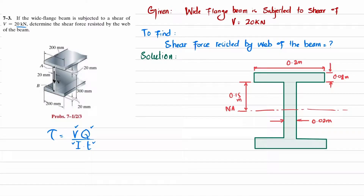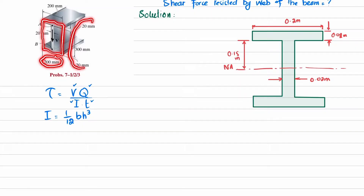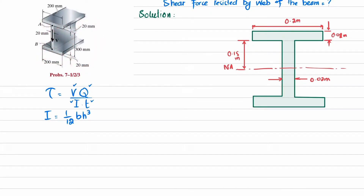First we will find I. We know that I = (1/12) b h³. We will take the whole cross section as a rectangle with width 200 mm and height 340 mm, find its moment of inertia, and then subtract the two empty portions. So I = (1/12) × 0.2 × (0.34)³, where the total height is 20 + 300 + 20 = 340 mm = 0.34 m.